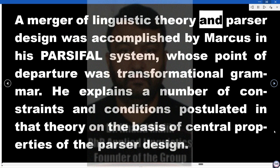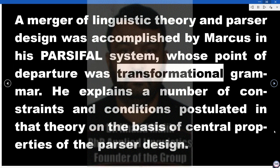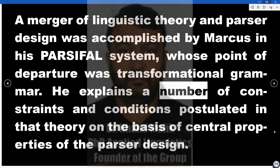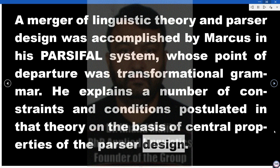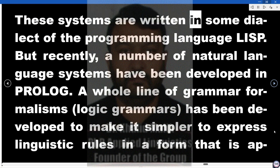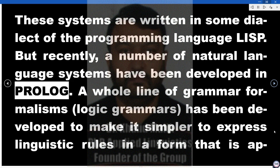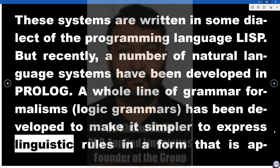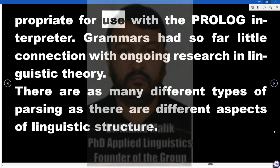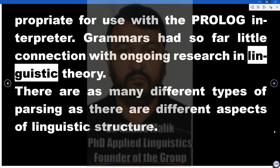A merger of linguistic theory and parser design was accomplished by Marcus in his Parsifal system, whose point of departure was transformational grammar. He explains a number of constraints and conditions postulated in that theory on the basis of central properties of the parser design. These systems are written in some dialect of the programming language LISP, but recently a number of natural language systems have been developed in Prolog. A whole line of grammar formalisms — logic grammars — has been developed to make it simpler to express linguistic rules in a form appropriate for use with the Prolog interpreter. Grammars had so far little connection with ongoing research in linguistic theory.